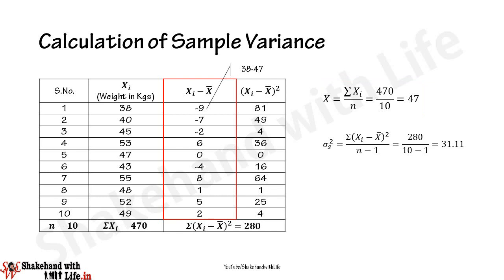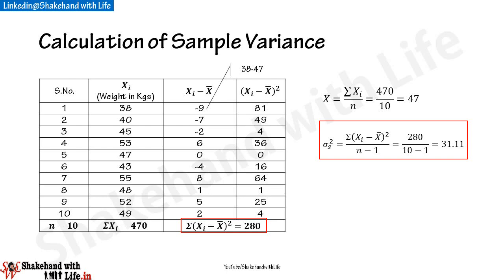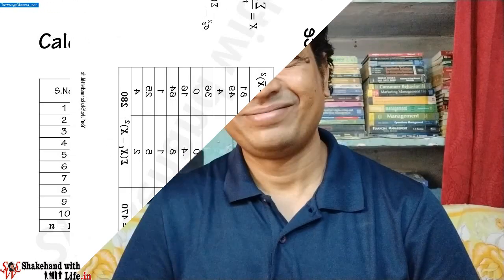In the third column, find the deviation of each Xᵢ from the average weight X̄, and in the fourth column find the square of the deviations (Xᵢ − X̄)². The sum of the squared deviations comes out as 280 kg². The sample variance is calculated as σ_s² = Σ(Xᵢ − X̄)² / (n − 1). Substituting the values, the sample variance comes out as 31.11 kg².